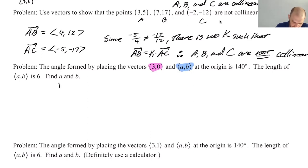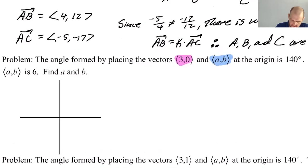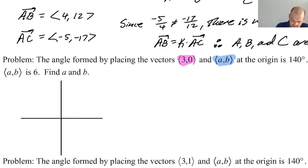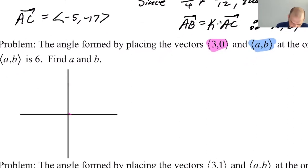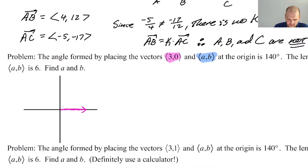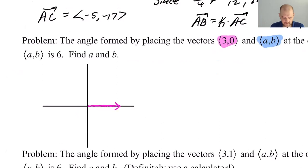So let's start with a picture. So let's say, we got this and then this. All right. So the vector a,b is going to be... No, the vector (3,0) is going to be like here. All right. So that's (3,0) and then a,b and this vector form an angle of 140 degrees, but we don't know which way. Right. So it could be that it's like this, right? Where this could be a,b and this would be 140 degrees or it could be that it's like this, where this is 140 degrees. There's no way to know.